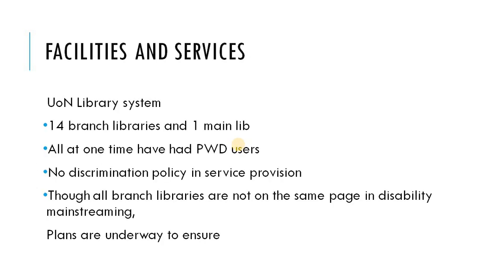Now let's go to facilities and services, which is my main topic — the facilities and services offered at the University of Nairobi Library System. This consists of 14 branch libraries and one main library. In all those libraries, at one time or another, they have had users with various disabilities. The policy is non-discrimination in service provision. Though all branch libraries are not yet on the same page in disability mainstreaming, plans are underway to ensure all libraries have the same facilities and services for persons with disabilities.